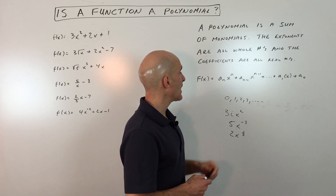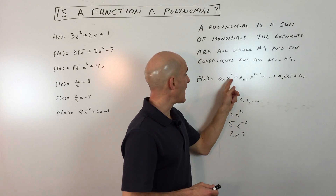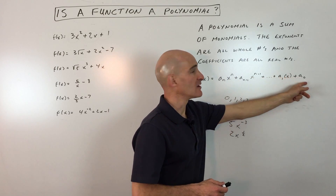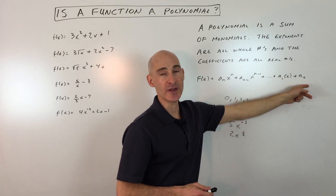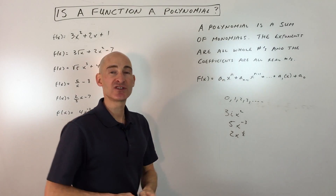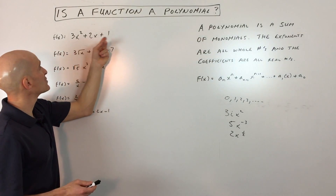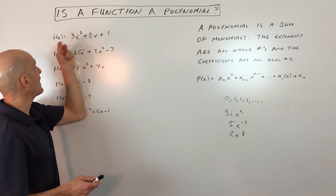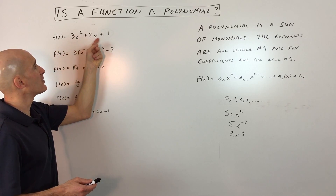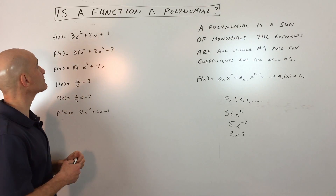When you write your polynomials, you want to write them in descending order, from the highest degree all the way down to the lowest degree. So let's look at some examples and see if you can tell whether these are polynomials or not. Take a look at this first example: f(x) = 3x² + 2x + 1. What do you think — is that a polynomial?